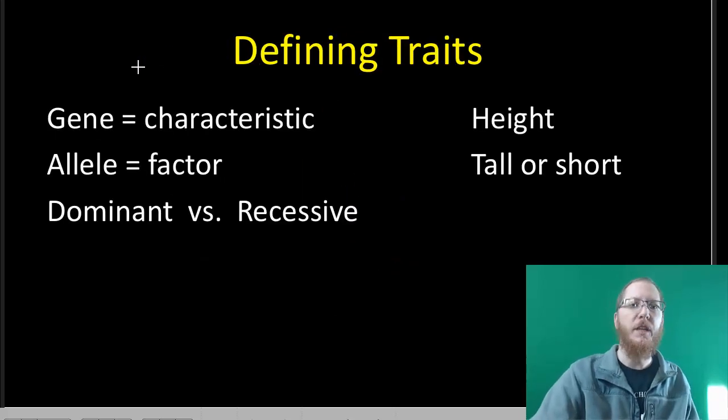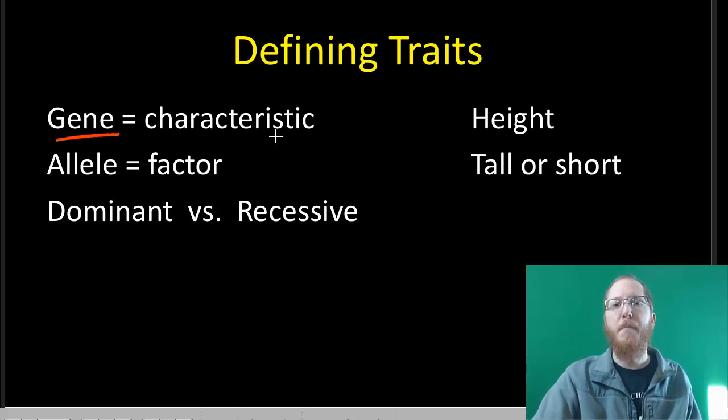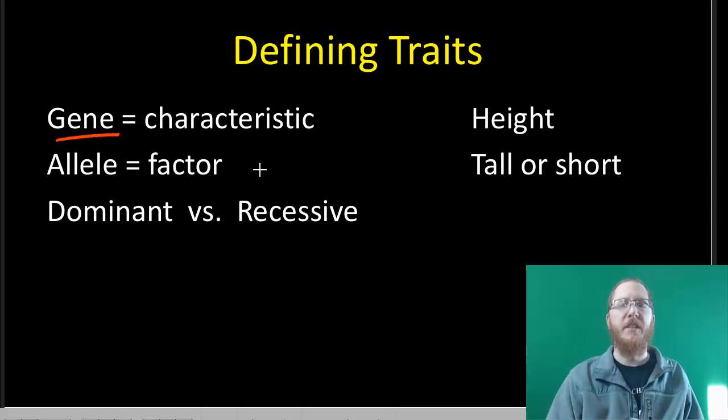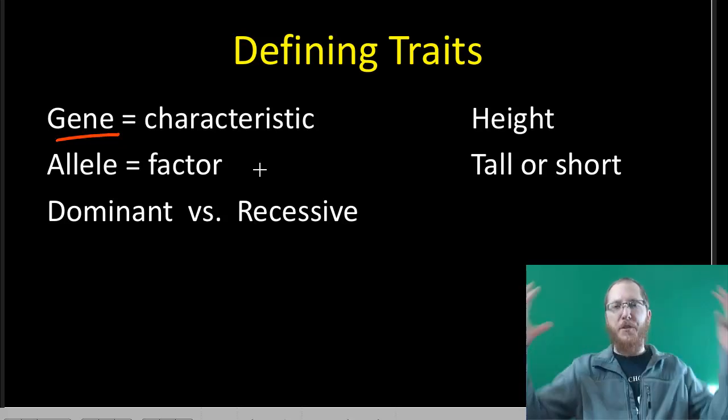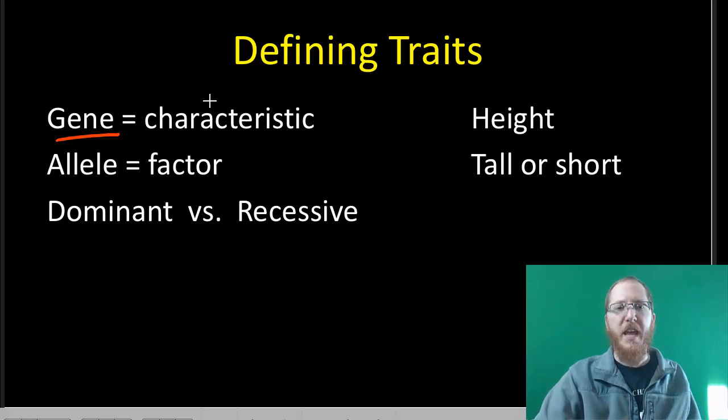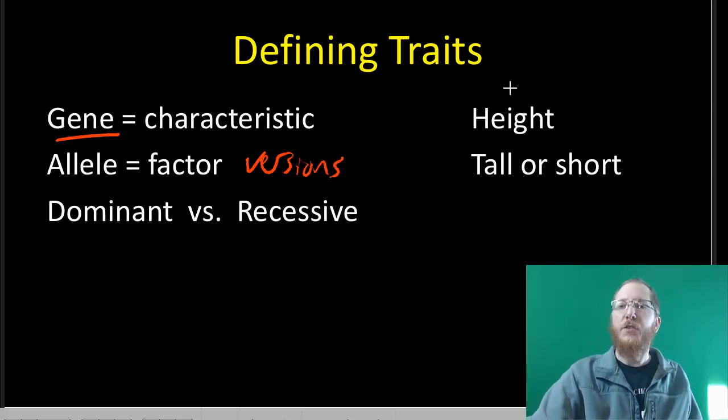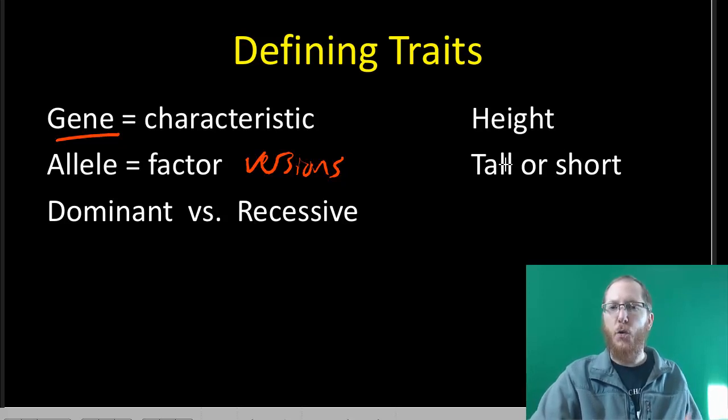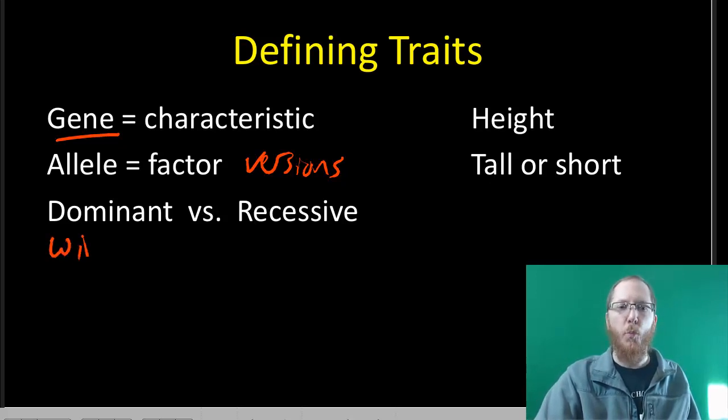The other terminology is I'm going to frequently use the term gene, whereas Mendel would have more likely said characteristic. He would have said there's a characteristic for height, there's a characteristic for flower color. This is the general thing. And then for those characteristics, there were different factors, different versions of the gene. We're going to call those alleles. So for height, there are two different factors or alleles. There's tall and there's short. We'll commonly represent those, if you remember, if it's dominant, if it's the one that tends to show up more.